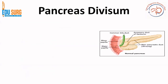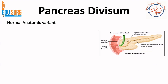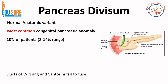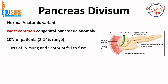A quick recap: the pancreatic duct is formed by the union of the duct of the dorsal bud and the ventral bud. The black structure shown is the duct of the dorsal bud, and the red is the duct of the ventral bud. After fusion, which happens around 6 weeks, the combined duct appears as the golden-yellow structure. In around 8 to 14 percent of cases, the duct of Wirsung and Santorini fail to fuse, leaving the dorsal and ventral ducts separately patent. This condition is known as pancreas divisum.